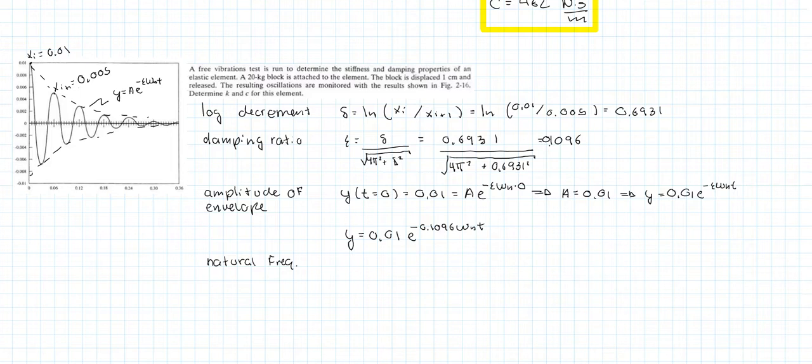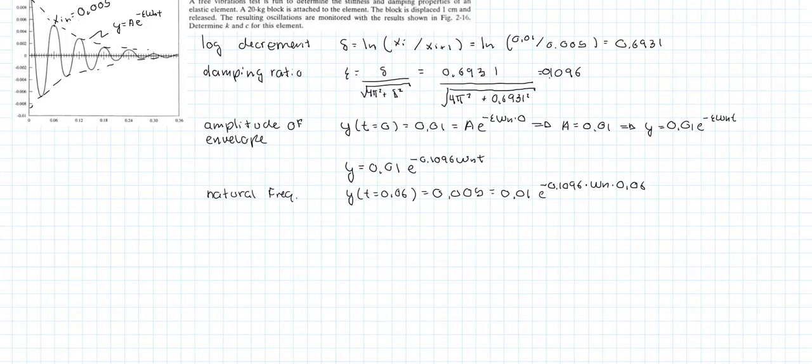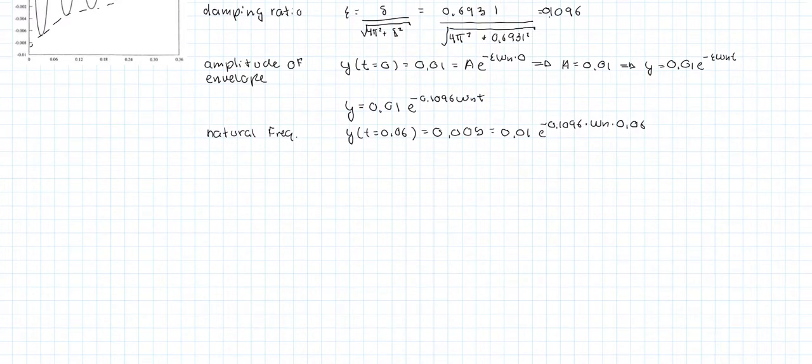So let's pick the second point at time equals 0.06 seconds. It's equal to 0.005, which in turn is equal to 0.01 e to the minus 0.1096 times the natural frequency times 0.06 seconds. Alright, so we're going to play around with this equation to solve for the natural frequency.